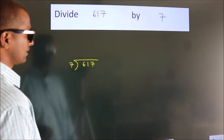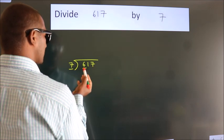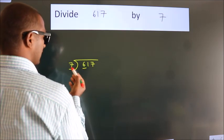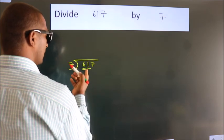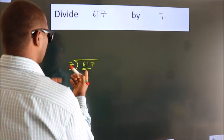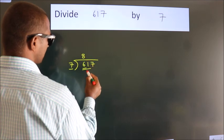Next, here we have 6, here 7. 6 is smaller than 7, so we should take 2 numbers: 61. A number close to 61 in the 7 table is 7×8=56.